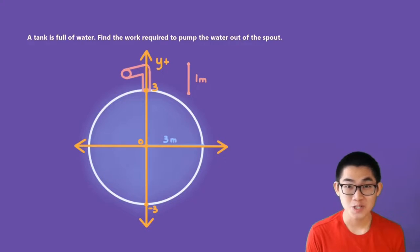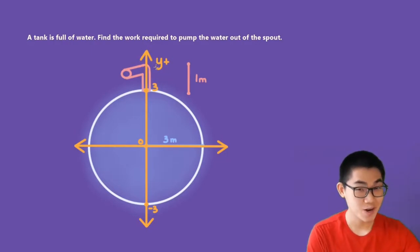For a circle, what you want to do is put the X and Y axis at the center. So this time, the origin is at the center and the positive Y direction is upwards. So don't forget that.